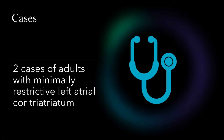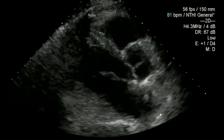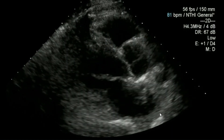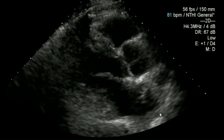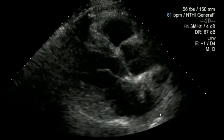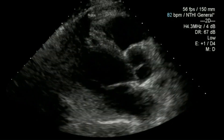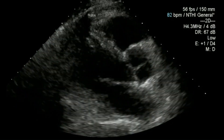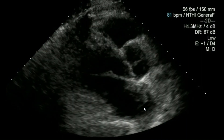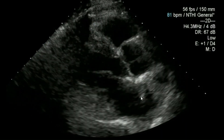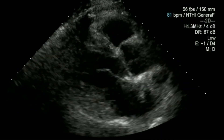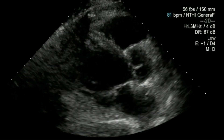Now I'm going to present a couple of cases of adults with minimally restrictive left-sided cor triatriatum. The first patient was a man in his 50s who had some increasing shortness of breath and slight swelling of the ankles. He did know that he had cor triatriatum. Looking at the initial image, the function looks fine — left and right ventricular. When you do look across the middle of the left atrium, you do notice an apparent membrane, although it's not that clear from that first view.